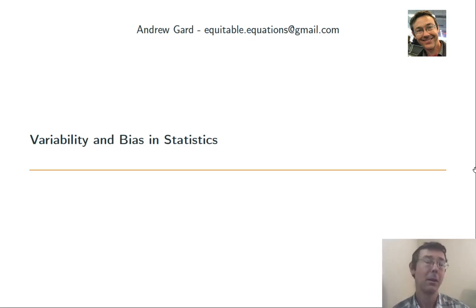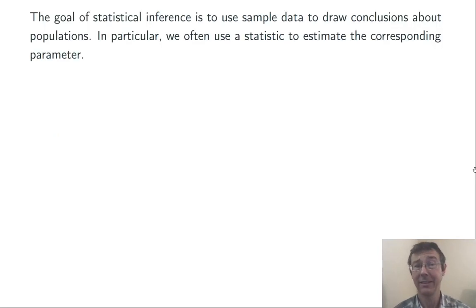Hey everybody, today we're talking about bias and variability in statistics. Big picture, the goal of statistical inference is to use sample data to draw conclusions about populations. In particular,